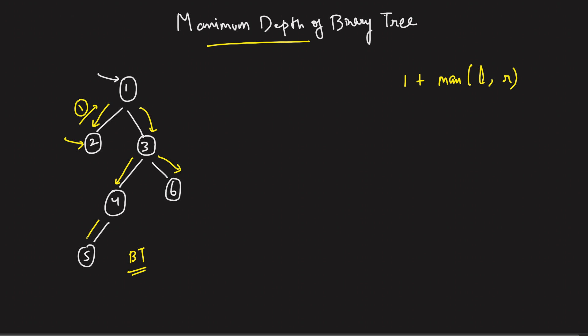So on left for node 5, we know the answer will be 1 plus max of left, that's 0 comma right, that's 0. So we can say it's going to be 1 for this node 5. Perfect.